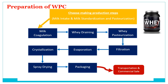For the preparation of whey protein concentrate: after cheese making, coagulation and draining yield the whey. This whey undergoes pasteurization, then filtration, then evaporation for concentration, then partial crystallization, and then spray drying to make a powder. This becomes whey protein concentrate, which has huge demand in the food industry, bakery industry, and sports industry as a protein supplement.